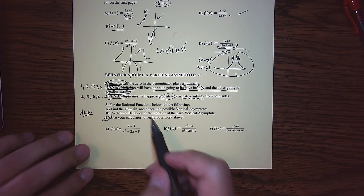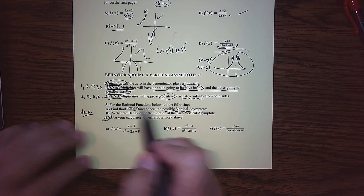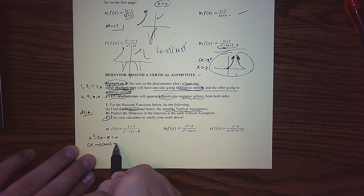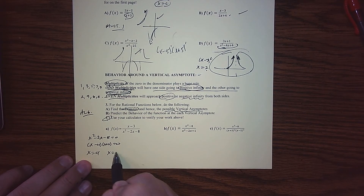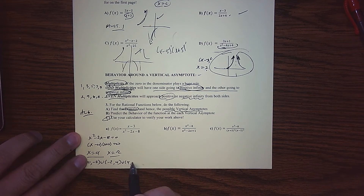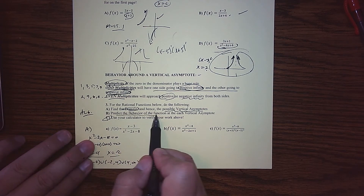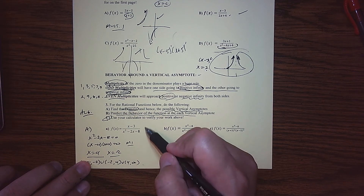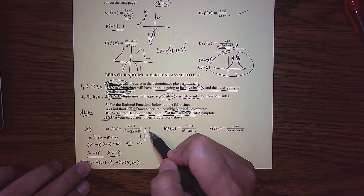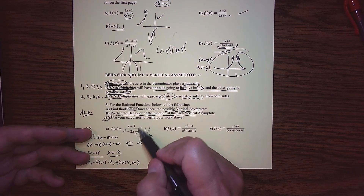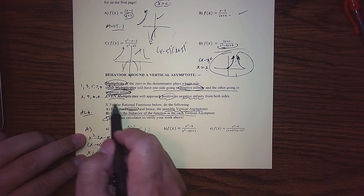Let's approach this algebraically and then verify with a calculator — that's part C. For part A, how do I find my vertical asymptotes? We basically find the domain, meaning where are the zeros in the denominator. Factoring gives us two zeros at 4 and negative 2. The domain is everything to the left, everything in between, and everything to the right of 4. For part B, we predict behavior at each vertical asymptote — both zeros have multiplicity of 1, so at negative 2 and at 4, the graph is going to be doing opposite things. In one direction we're going to positive infinity, in the other to negative infinity, because we have odd multiplicity.